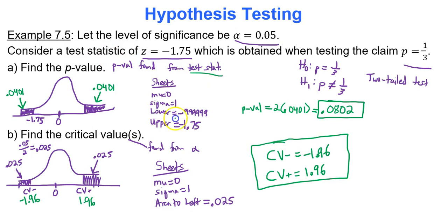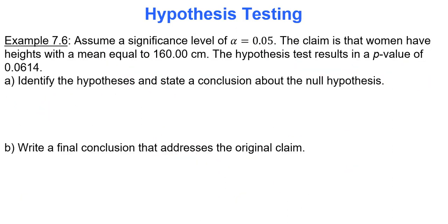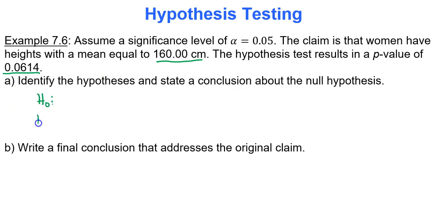Remember: p-value is found from the test statistic, and the critical value is found using alpha. Now, let's assume a significance level of alpha equals 0.05, and the claim is that women have a mean height equal to 160. The hypothesis test results in a p-value of 0.0614. Identify the hypotheses and state the conclusion about the null hypothesis.